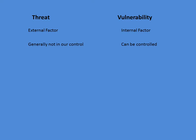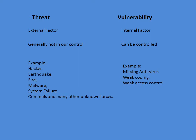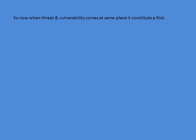Examples of vulnerability include missing antivirus and broken access control — these are internal weaknesses. Examples of threats include hackers, earthquakes, fire, and malware — these are external factors. Threats cannot be controlled by us, but vulnerabilities can be controlled. When a threat and a vulnerability come together in the same place, they constitute a risk.